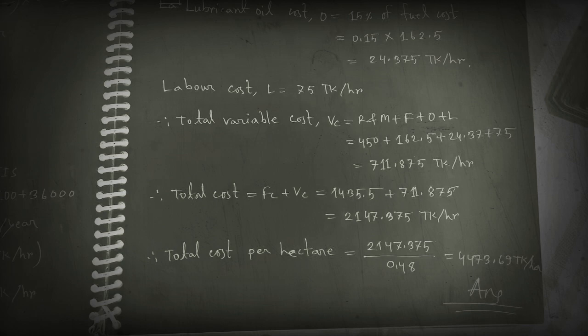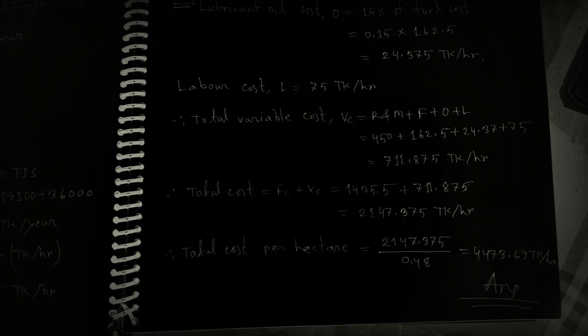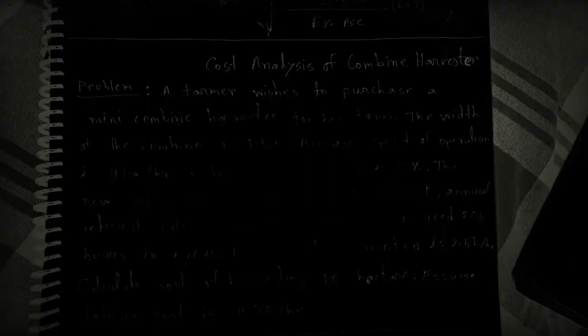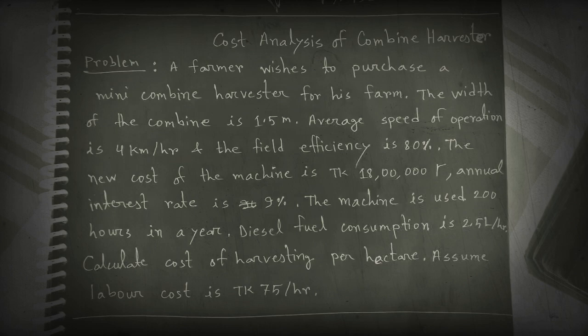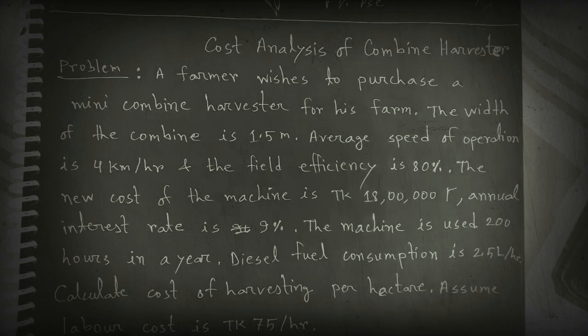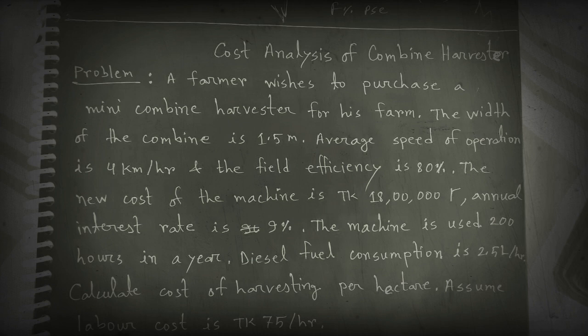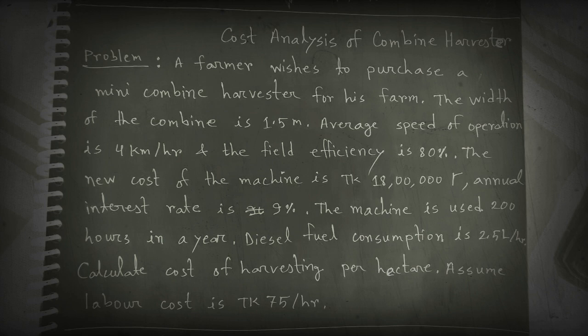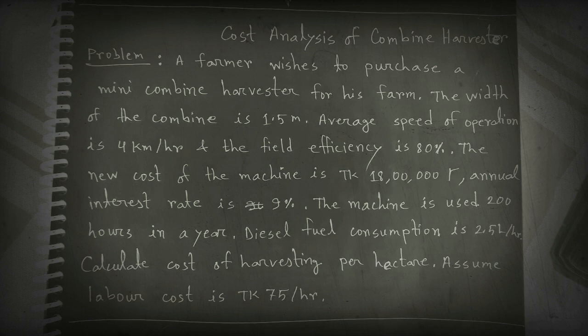First, we read the problem. A farmer wishes to purchase a mini combine harvester for his farm. The width of the combine is 1.5 meters, the average speed of operation is 4 kilometers per hour, and the field efficiency is 80%. The new cost of the machine is 18 lakh taka.